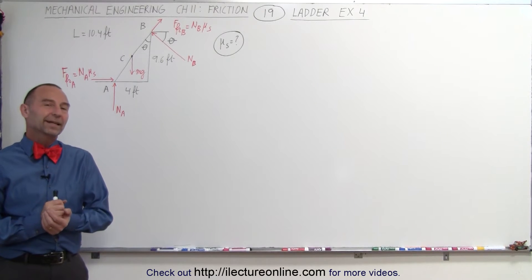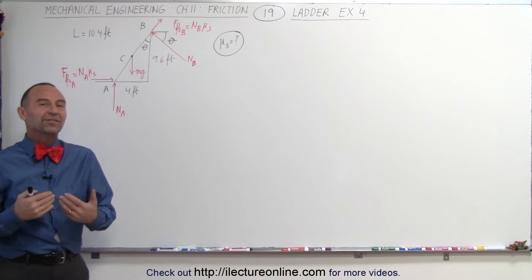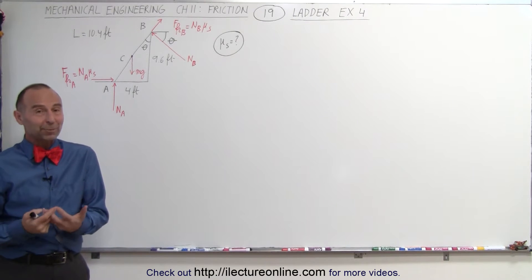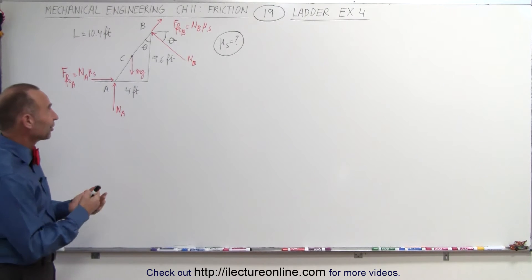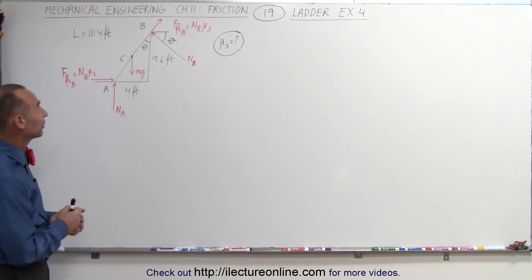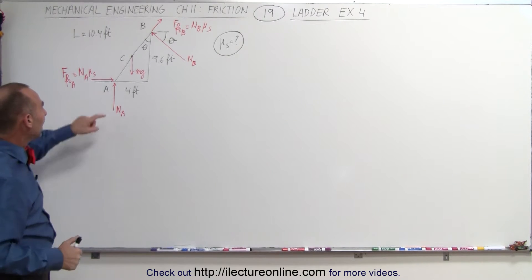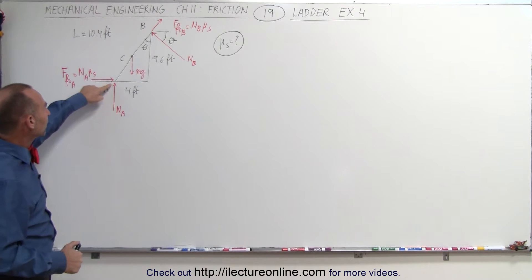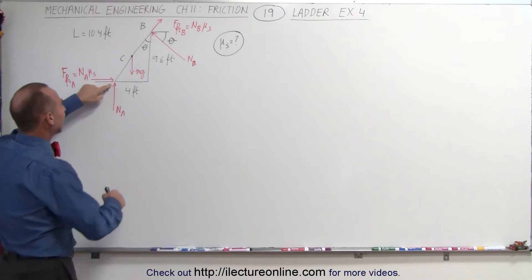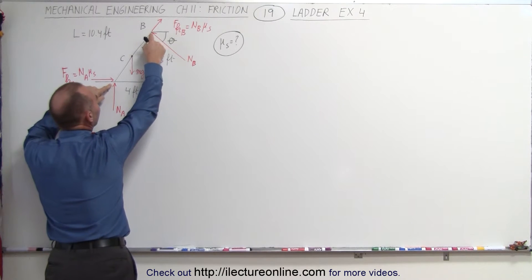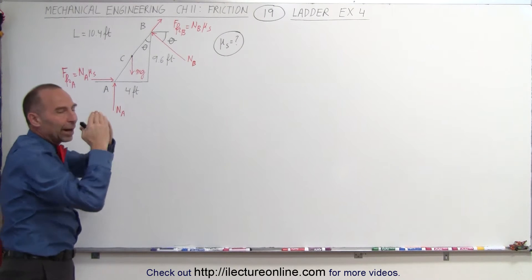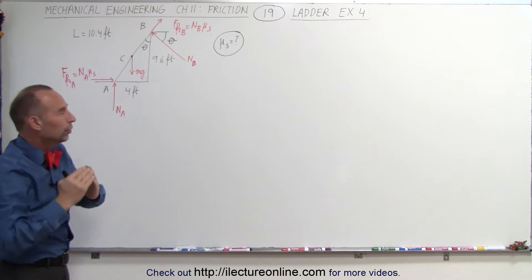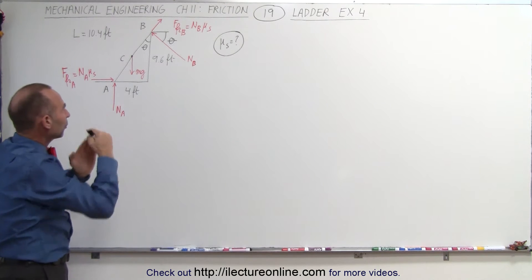Welcome to our lecture online. Here's our next example with a ladder problem. There are different kinds of scenarios we could run into. Here's scenario number four: we have friction both at the bottom and at the top, but in this case at the top the ladder is resting right at the corner of that wall.